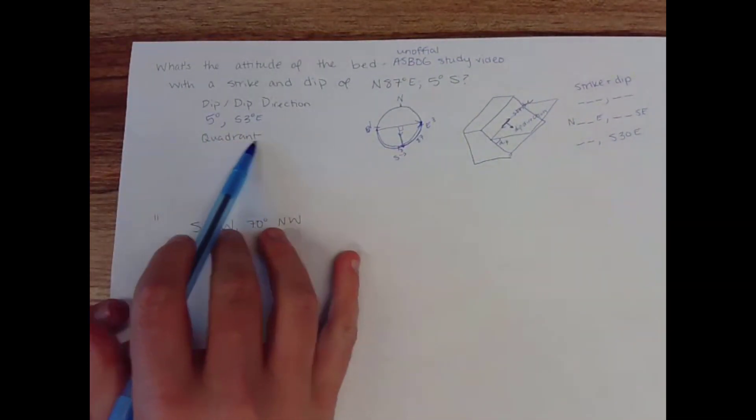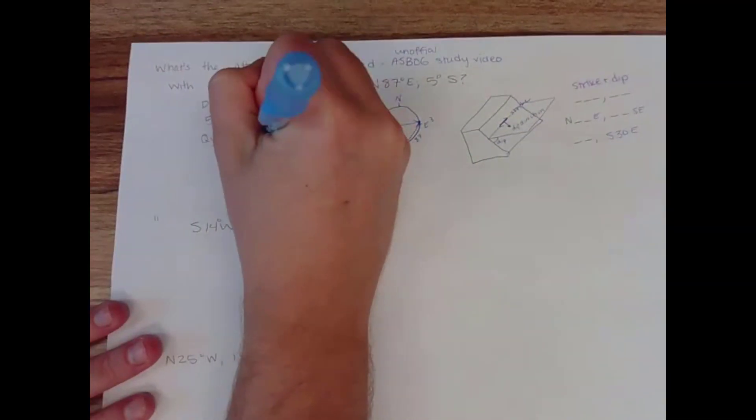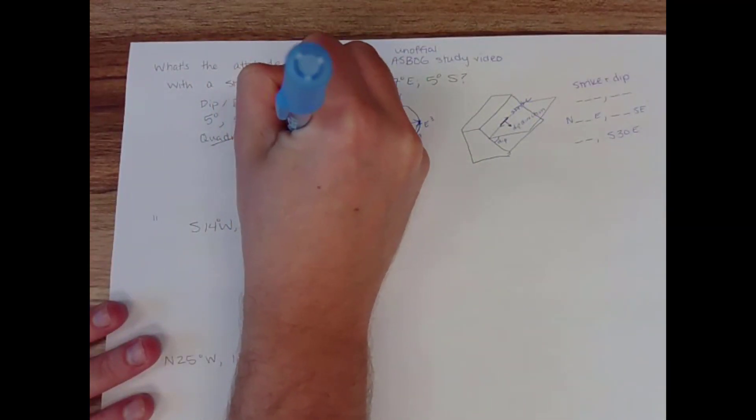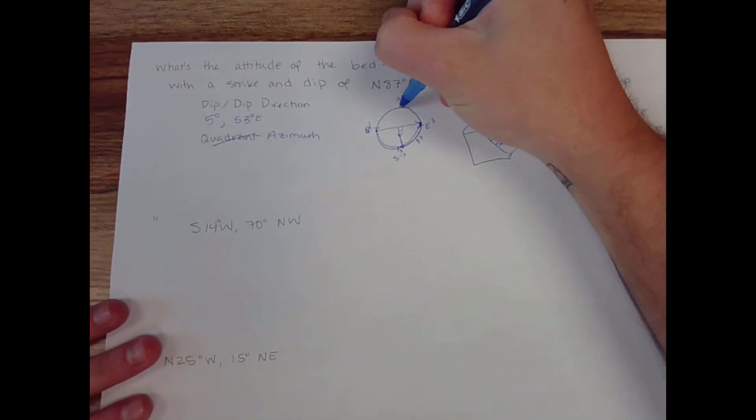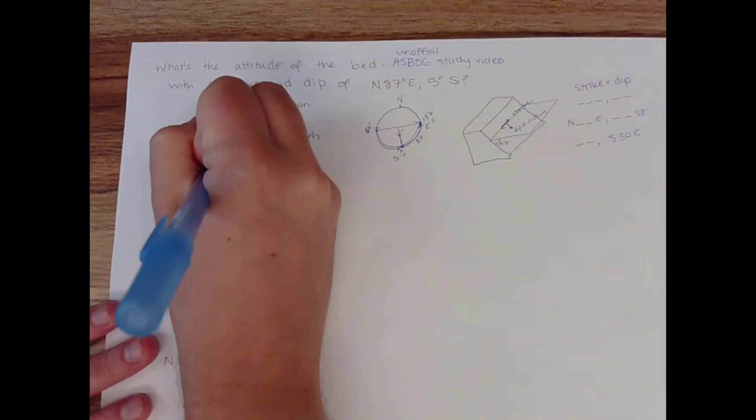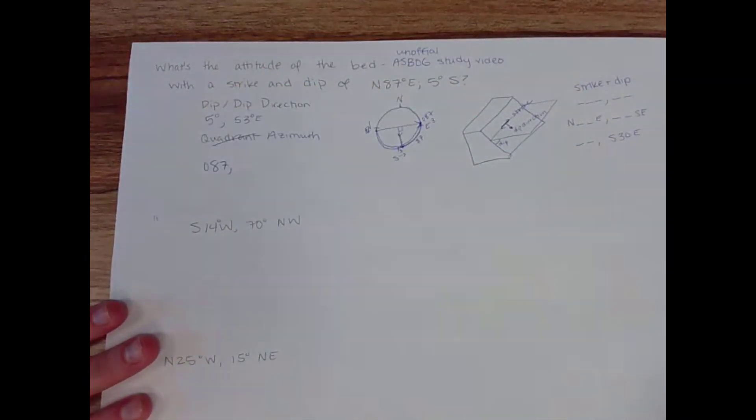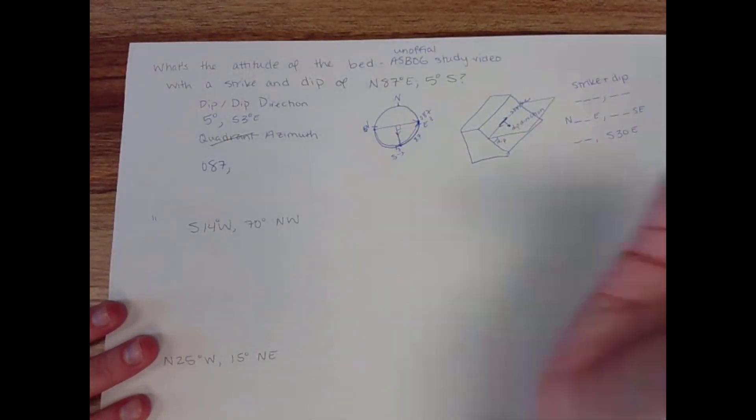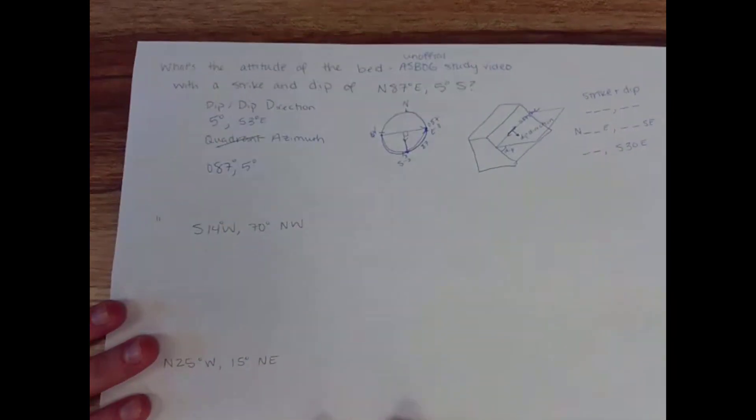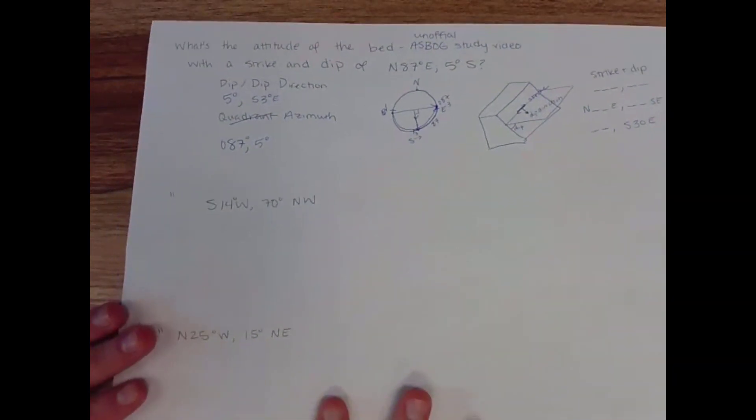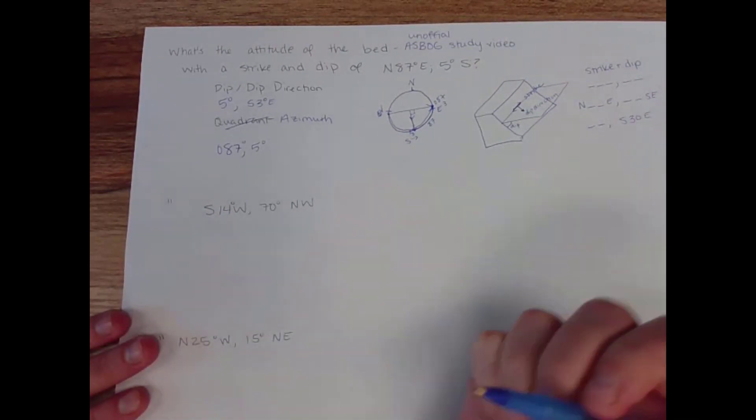Now I wrote quadrant here, but we're given it in quadrant. So let's write this in azimuth. All right, north is 0 in azimuth. So if I go around 87 degrees, I'm at 087. And my dip is 5. So that's my azimuth notation for this problem. All right, let's try this next one.